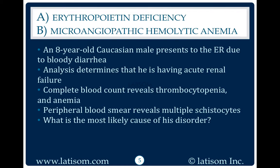An eight-year-old Caucasian male presents to the ER due to bloody diarrhea. Analysis determines that he is having acute renal failure. Complete blood count reveals thrombocytopenia and anemia. Peripheral blood smear reveals multiple schistocytes. What is the most likely cause of his disorder? Microangiopathic hemolytic anemia.